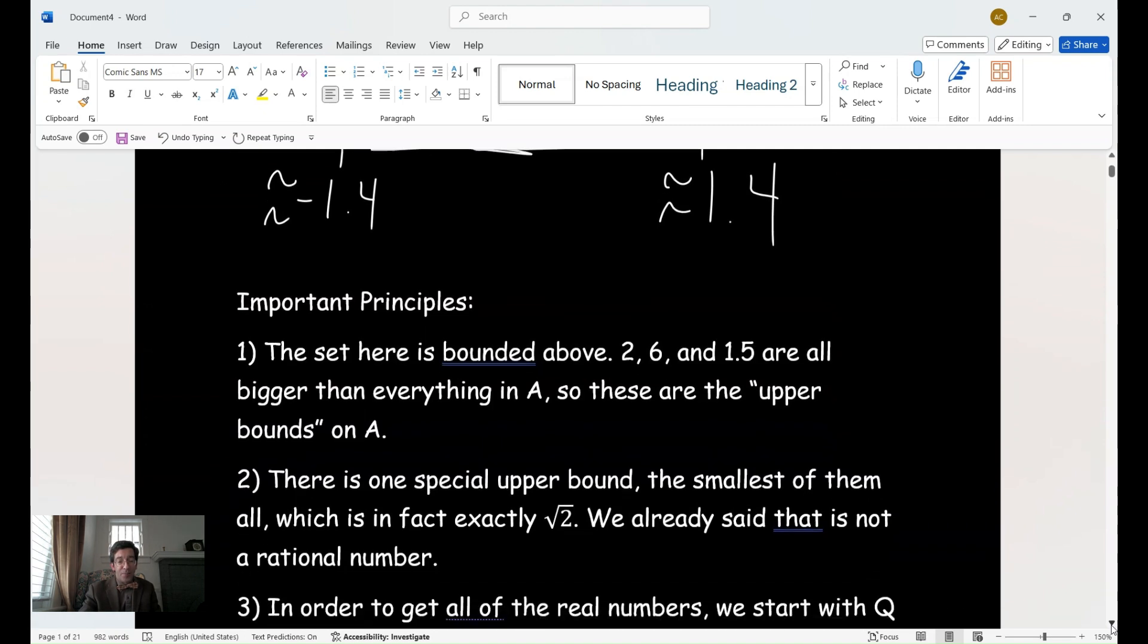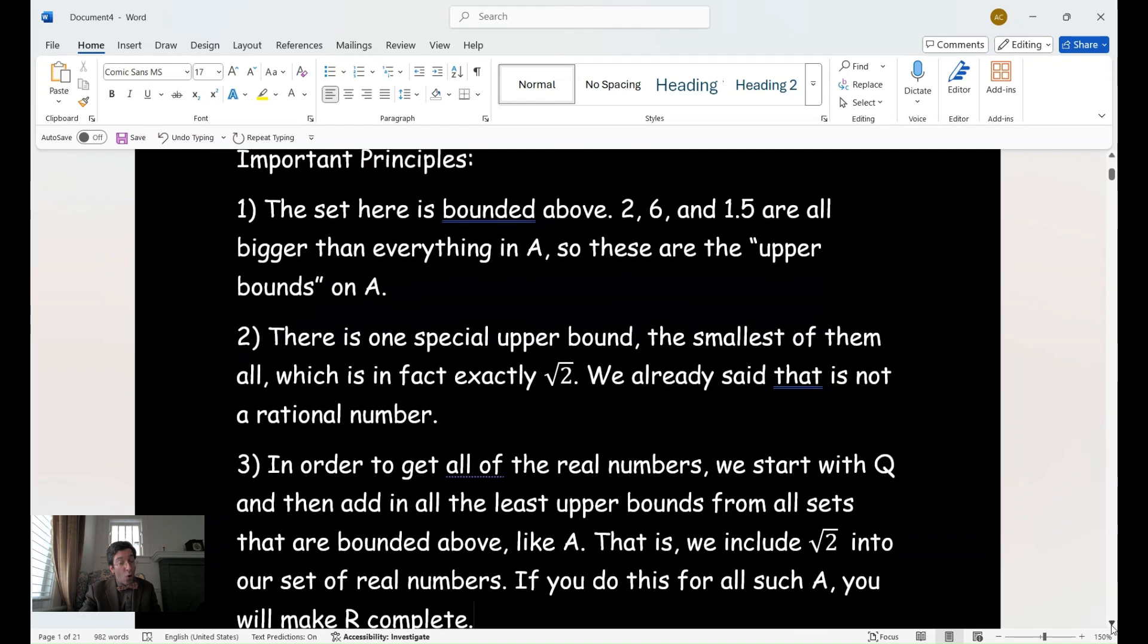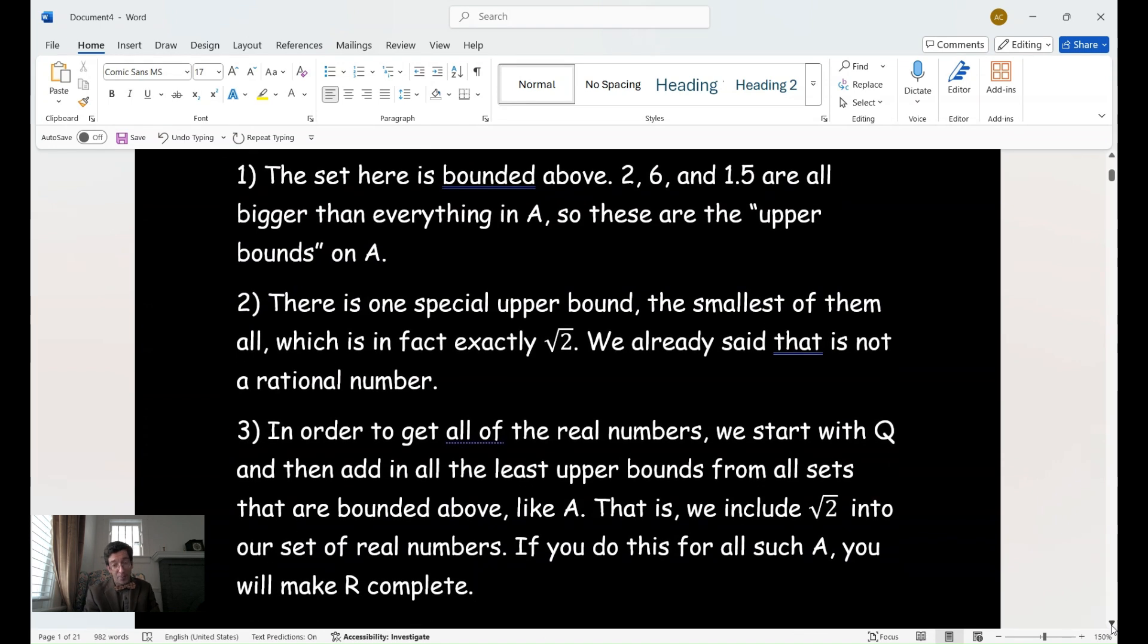And the third principle is that in order to get all of the real numbers, we must start with Q and then add in all the least upper bounds from all sets that are bounded above like A. And that is, we include the square root of two into our set of real numbers. And if you do this for all such A, you will make the reals complete.